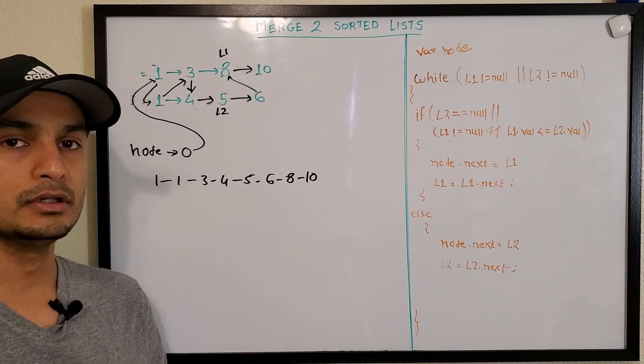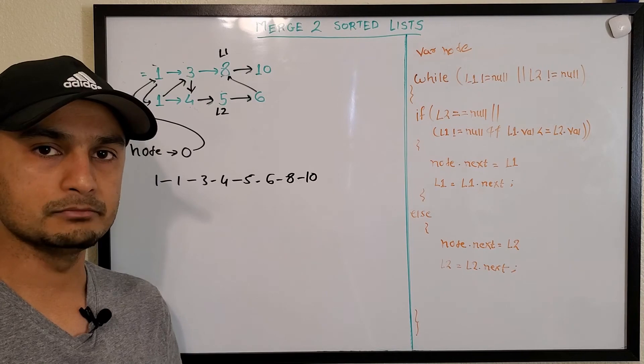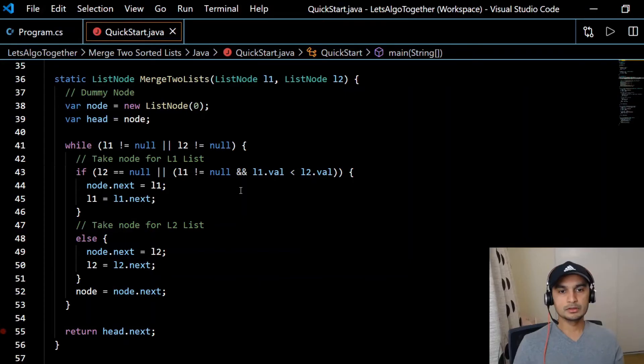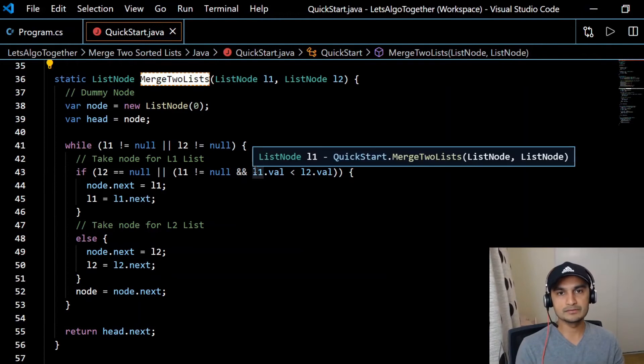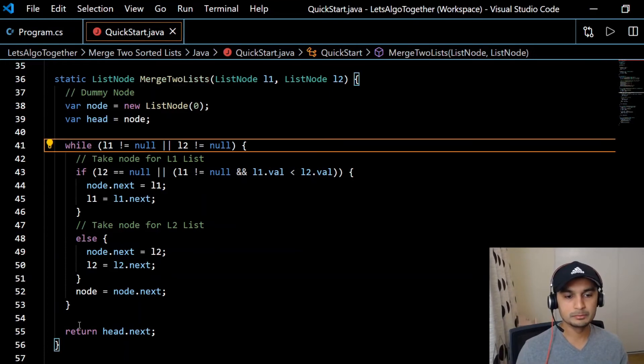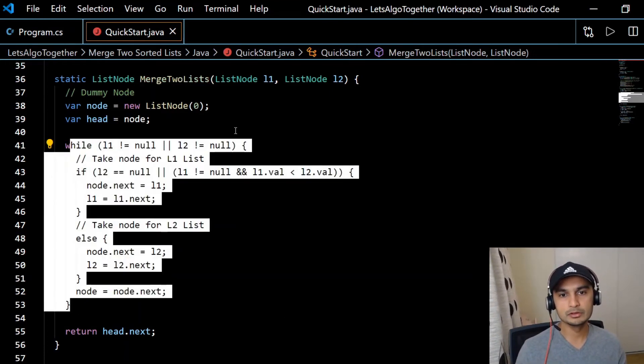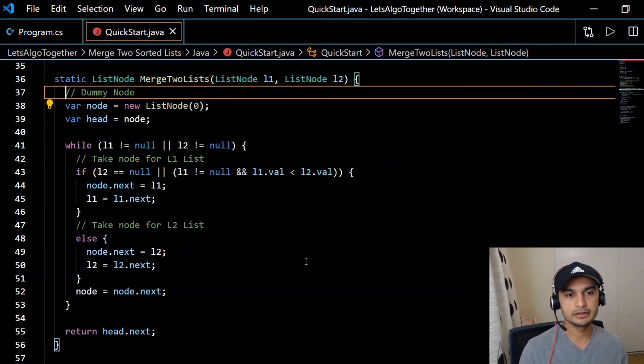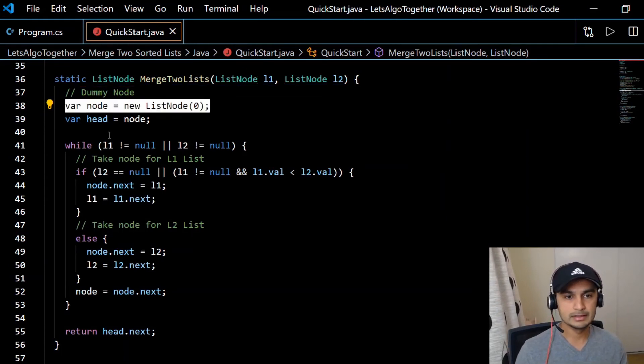Okay, so this is our final code. This is Java code. We also have C# code over here, so feel free to use whichever version you like. The while loop is pretty much similar to what we discussed on the whiteboard. The only thing I can mention over here is we're creating a dummy node called node.